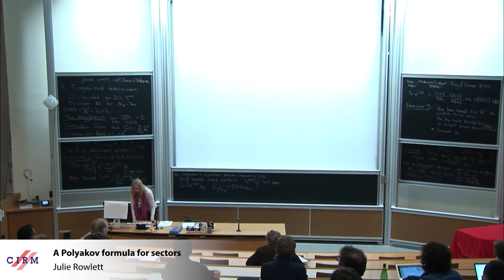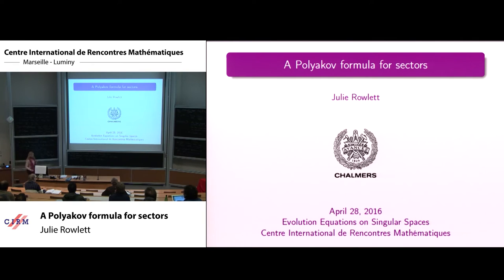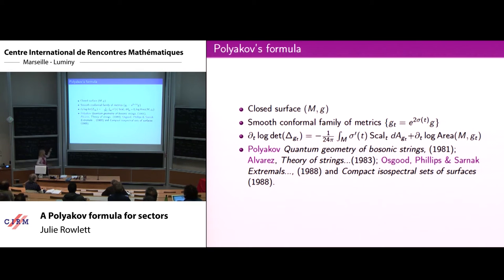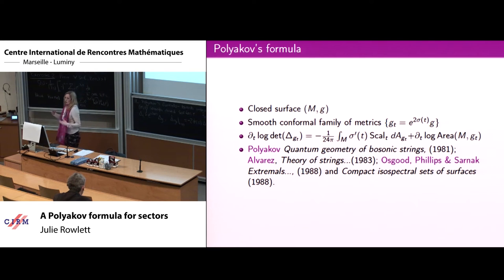One can use this fact to determine a formula for the derivative of the determinant, where the derivative is taken with respect to variation within a conformal class. This is Polyakov's formula — I believe this precise formula is due to Alvarez — for exactly this setting. I want to make a very big point that these conformal factors are smooth. It gives the variation of the logarithm of the determinant, which is ζ'(0), in terms of nice computable local quantities.